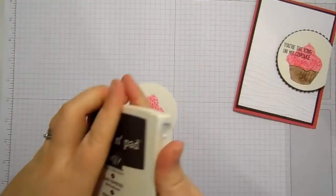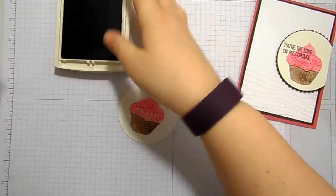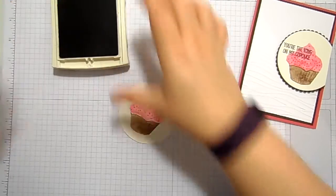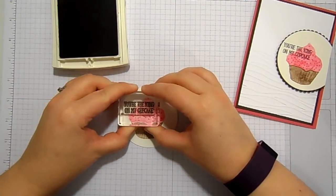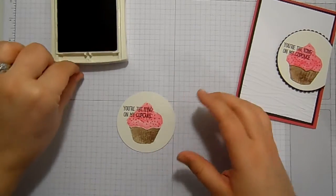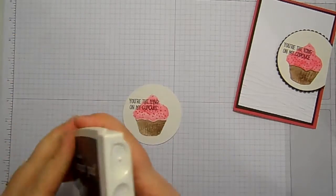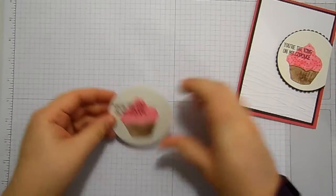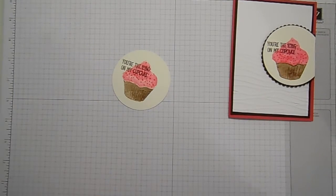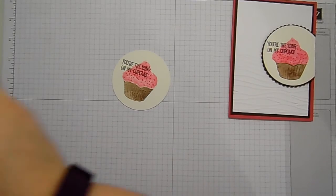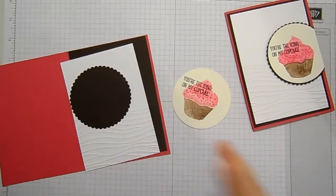And then I also need my Early Espresso back again to add the sentiment. And this says 'you're the icing on my cupcake', which is just so sweet. So I think the reason I've chosen this stamp, I do love this stamp set. But one of the reasons I've chosen it is because I have off cake at the moment, because it's January. How's everybody else's New Year's resolutions going?